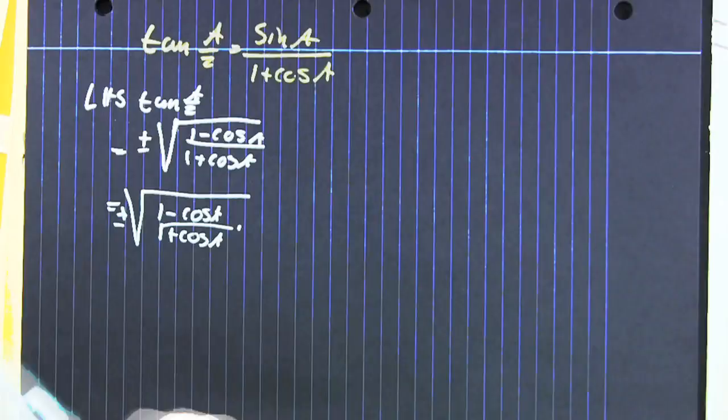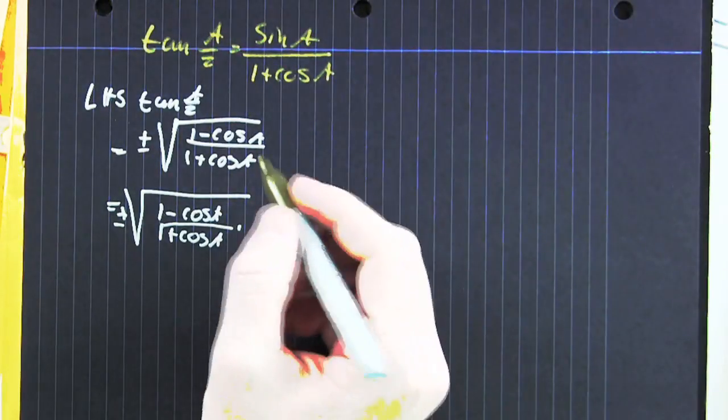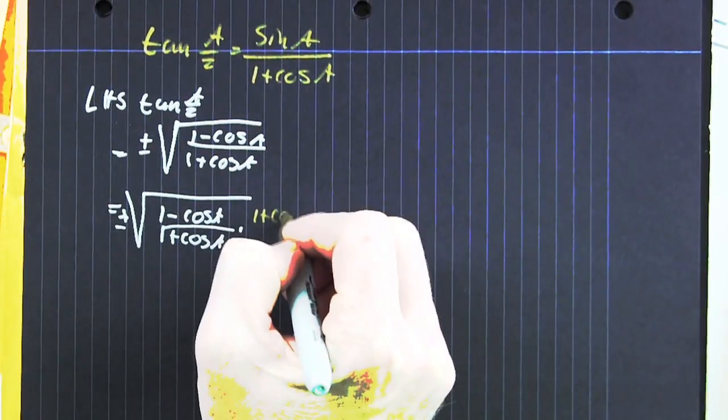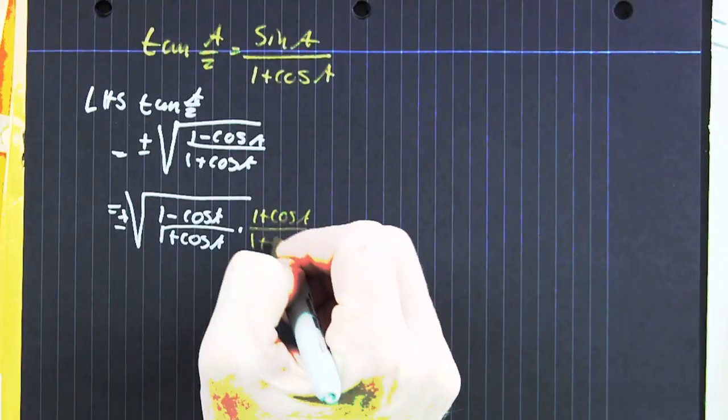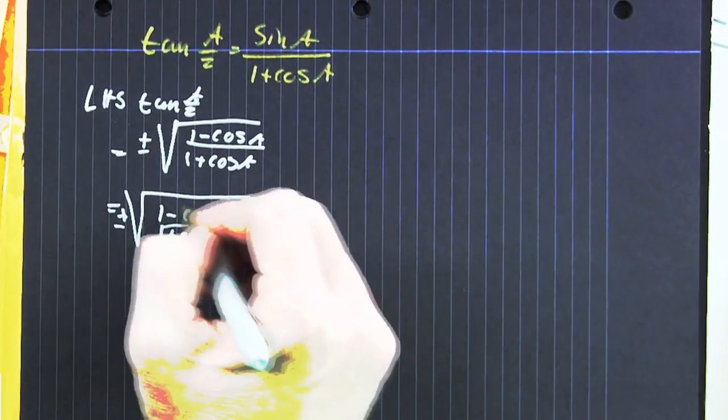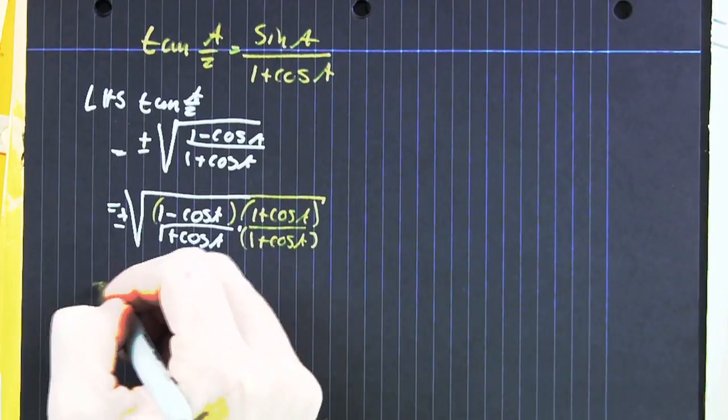So we say that we're going to multiply by the conjugate. And you're like, why? Well, why don't we wait and see what we get? So we're multiplying top and bottom by the conjugate.